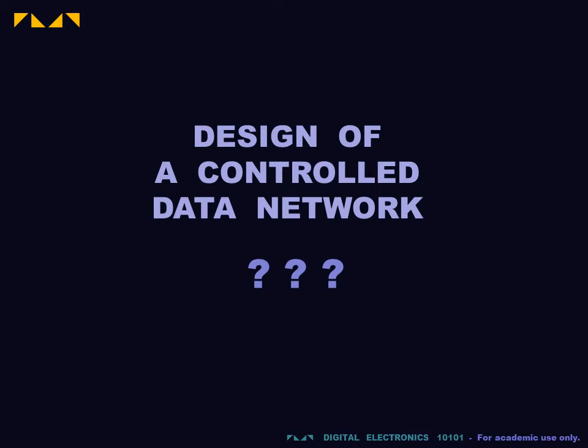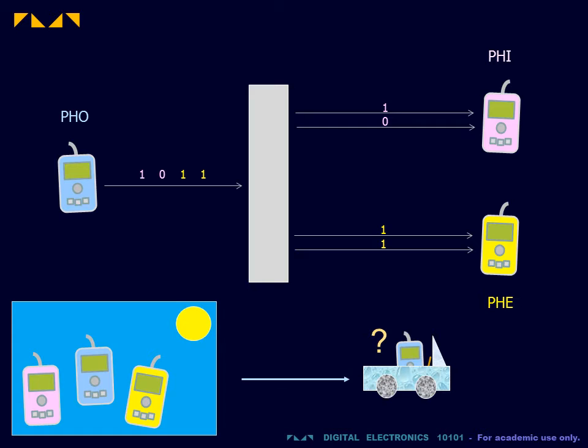We continue our development of a network that performs controlled data flow. In the previous video, we defined a data control problem requiring data conversion and data channeling.